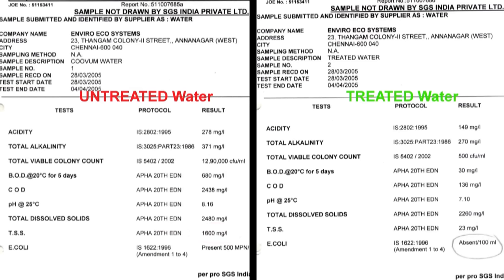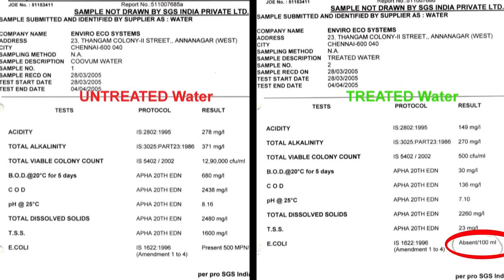And the main highlight — E. coli, the most difficult bacteria to eliminate, which was 500 MPN in 100 ml of the untreated water, had come down to 0 in the treated water.